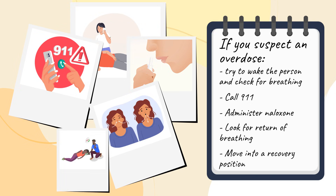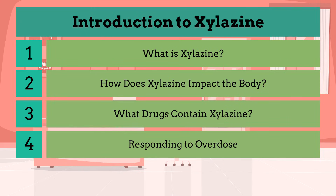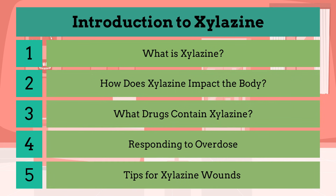Move the person into a recovery, side-lying position, remain with them, and wait for paramedics. All staff should be trained in overdose response. Finally, let's talk about one of the most visible effects of xylozine use — wounds. This section covers how to care for them and what steps can help promote healing.